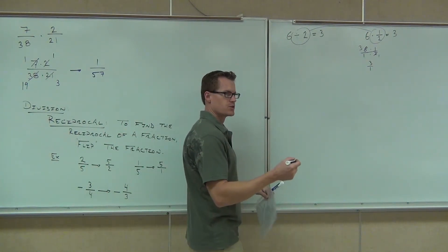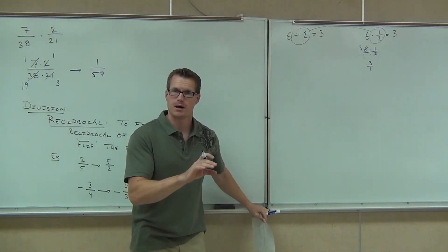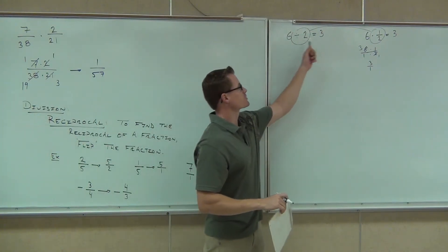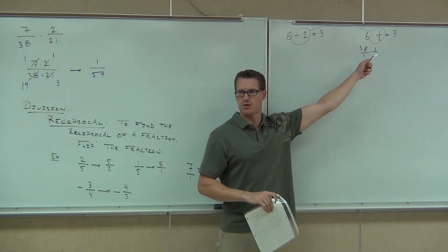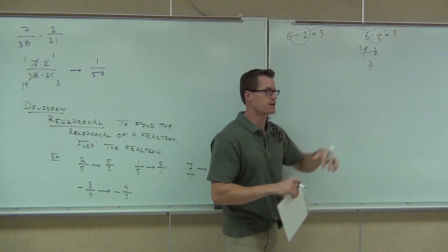Division of fractions is the same thing as the multiplication by the reciprocal of the second fraction. One more thing I need to notice from this example. Did I do anything to the six? Did the six change at all? No. Six didn't change. It's just the second number that I'm reciprocating.